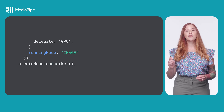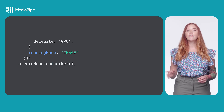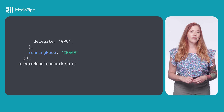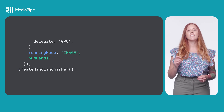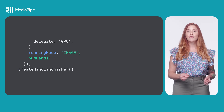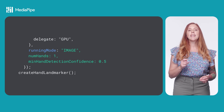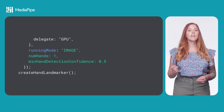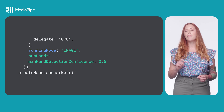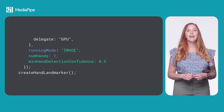You can provide optional parameters to initialization. Running mode is either image or video depending on whether you run detection on images or videos — image is the default value. NumHands is the maximum number of hands detected by the Hand Landmark Detector; it's an integer with a value of 1 or greater and a default value of 1. MinHandDetectionConfidence is the minimum confidence score for the hand detection to be considered successful in the POM detection model; it's a float value from 0 to 1 with a default value of 0.5.